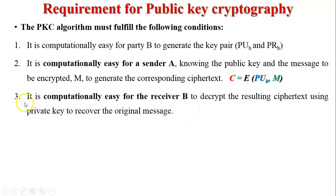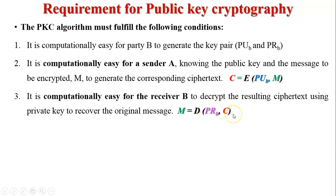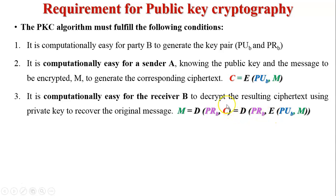Third, it is computationally easy for receiver B to decrypt the resulting ciphertext using the private key pr_B to recover the original message. So pr_B is the private key of user B, which remains secret. Using pr_B, the ciphertext is decrypted and the original message is recovered. Putting the value of C from equation 1, M equals decryption using pr_B of the encrypted message.